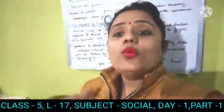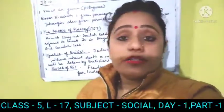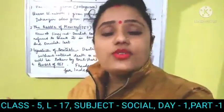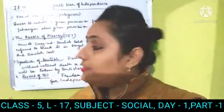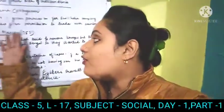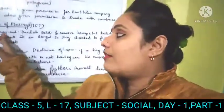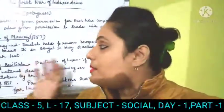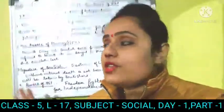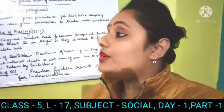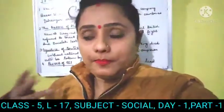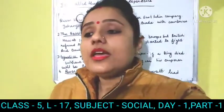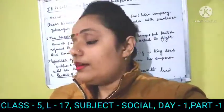Siraj-ud-Daula said he was going to fight with the British. The British had a very good, organized army. They fought with Siraj-ud-Daula and Siraj-ud-Daula lost that war. So the Battle of Plassey took place in 1757 between Nawab Siraj-ud-Daula and the British. Siraj-ud-Daula lost, and the British captured all the kingdoms of Siraj-ud-Daula. Bengal was a very big state at that time. Slowly, the British captured all the states of our country India.